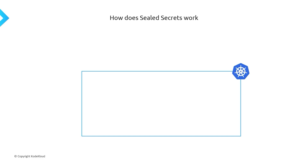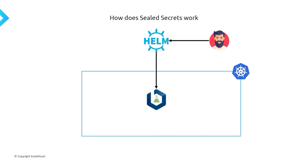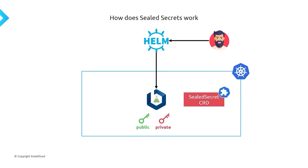So how exactly does Sealed Secrets work? To deploy Sealed Secrets, the first thing we have to do is deploy the Sealed Secrets operator onto a Kubernetes cluster. You can deploy the manifest by itself, or you can use Helm to deploy the Sealed Secrets operator. When you deploy the operator, there's going to be a sealed secret custom resource definition — this is the new object we're going to be working with. On top of that, the operator is also going to create a public key and a private key, which are the keys used for encrypting and decrypting.